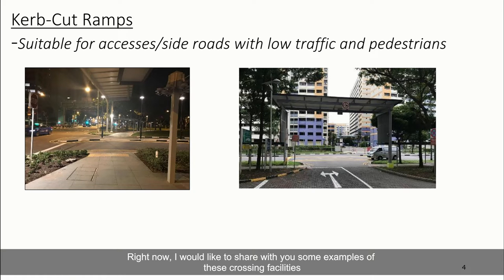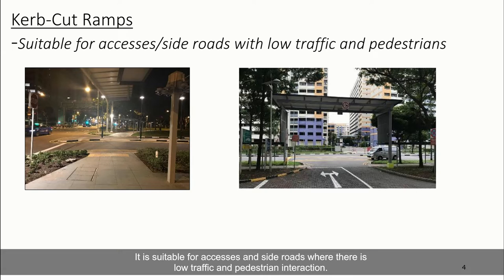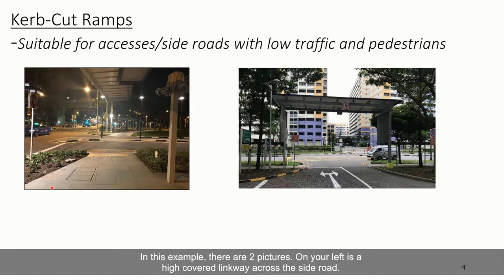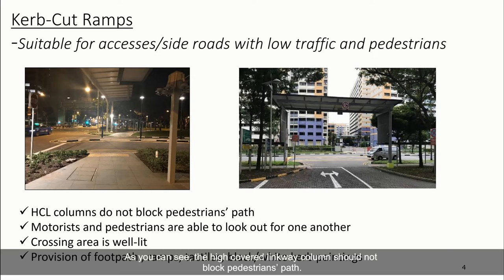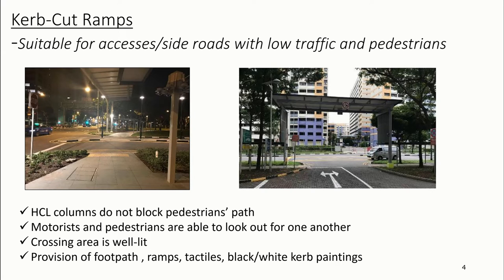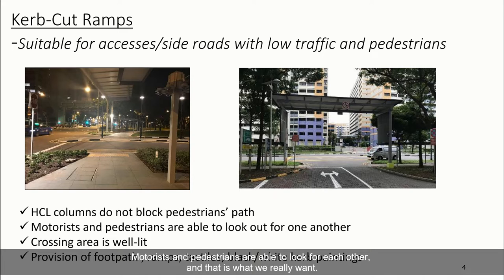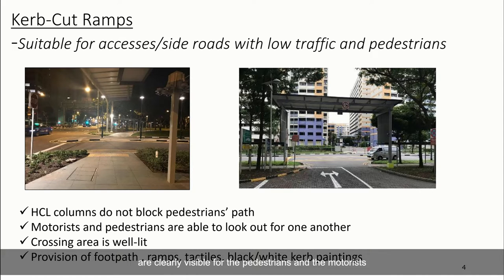The most basic crossing type is curb cut ramps, or informal crossings. It is suitable for accesses and side roads where there is low traffic and pedestrian interaction. Here you have two pictures: one showing an HCL across a side road, and one showing an HCL across an HDB access. The HCL columns should not block the pedestrian's path. Motorists and pedestrians must be able to look out for each other, and the area has to be well lit. Footpath, ramps, tactiles, road markings, and curb markings should be clearly visible.